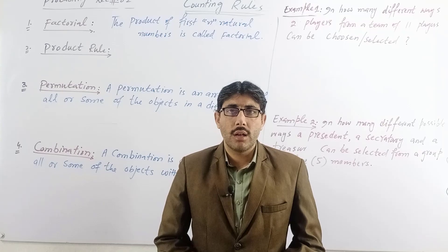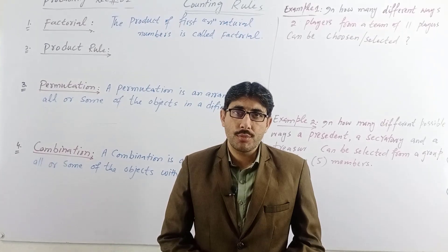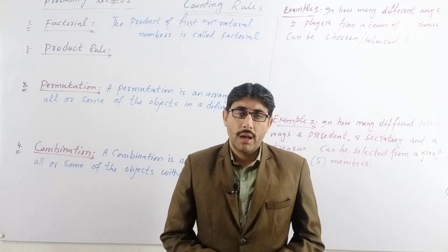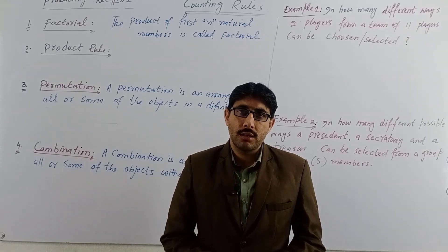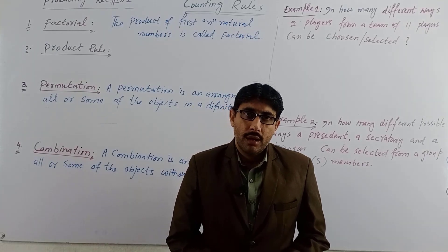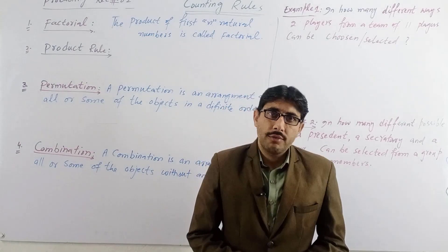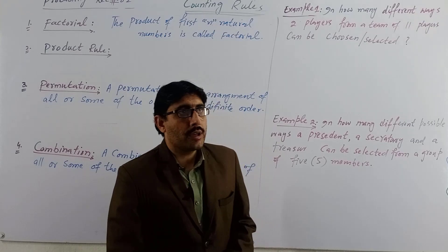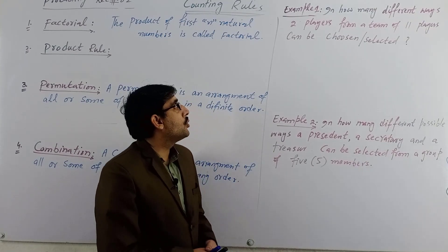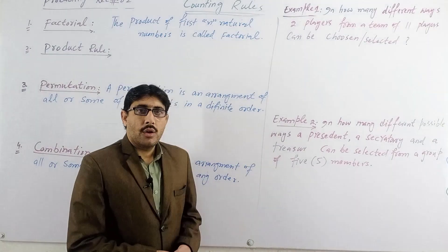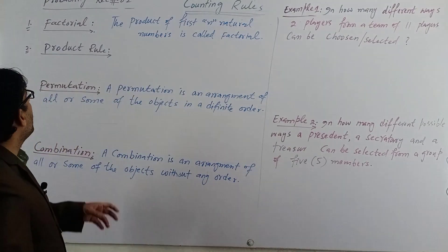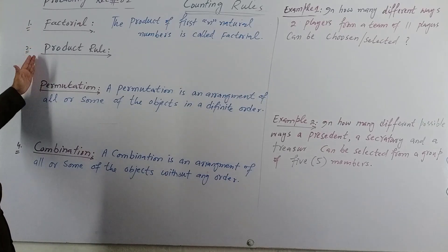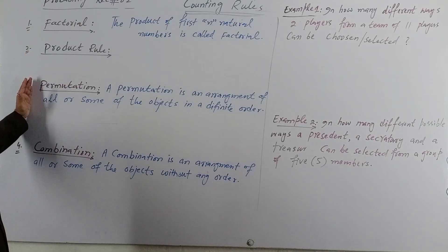Assalamu alaikum, this is Ayat Khan, welcome to my YouTube channel IQ Math Academy. In this lecture on probability theory, we are going to discuss counting rules. There are four things we have to understand and discuss: factorial, product rule, permutation, and combination.